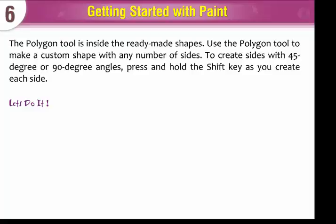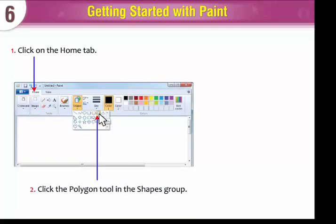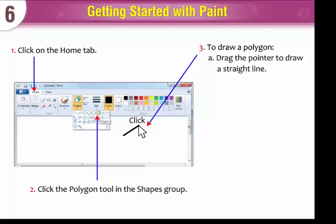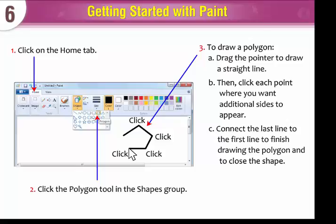Let's do it. To use the polygon tool, click on the Home tab. Click the polygon tool in the shapes group. To draw a polygon, drag the pointer to draw a straight line. Then click each point where you want additional sides to appear. Connect the last line to the first line to finish drawing the polygon and to close the shape.